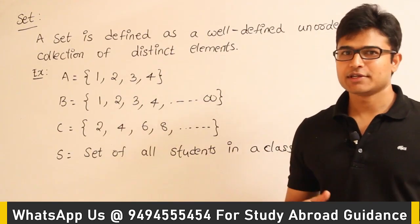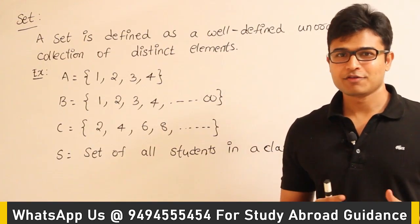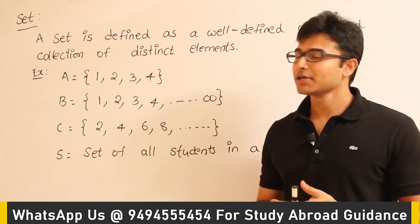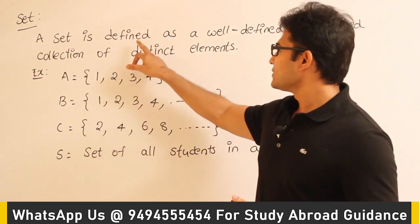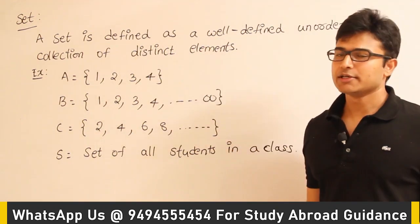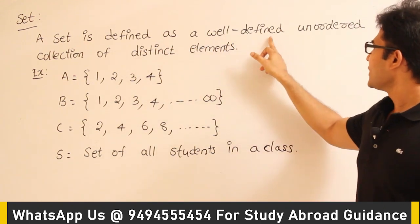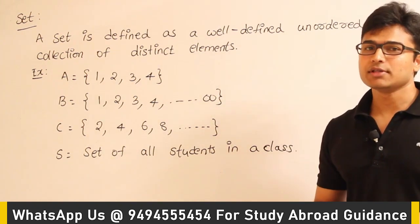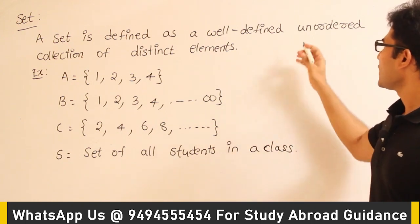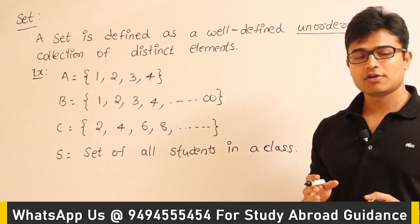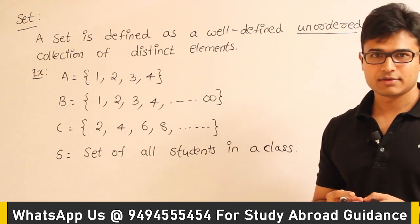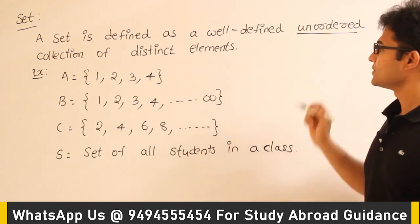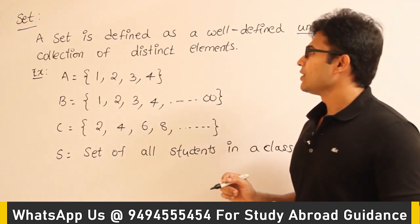You must be knowing about the definition of a set, but just for the sake of completeness, I'll do everything from the basics. A set is defined as a well-defined, unordered collection of distinct elements. The main words to catch here are 'unordered' — which means the order of elements does not matter — and 'distinct elements'.